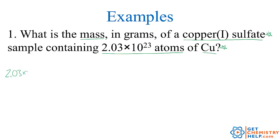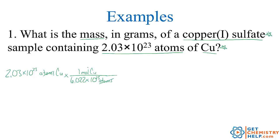We start with 2.03 times 10 to the 23rd atoms of copper. I'm starting with copper and trying to get to the mass of copper(I) sulfate. The way to relate one substance to another is through moles, so I need to get atoms of copper into moles of copper. We use Avogadro's number: for every one mole of copper, there are 6.022 times 10 to the 23rd atoms of copper. So atoms cancel and now I'm in moles of copper.